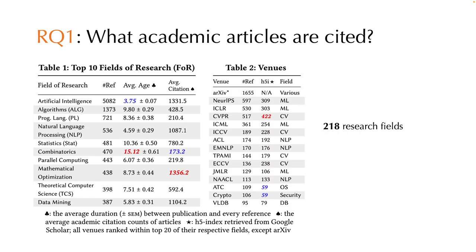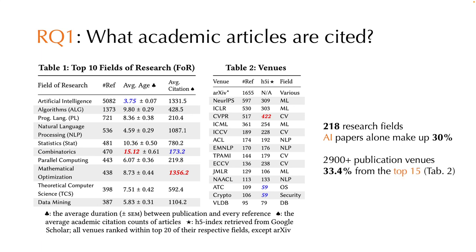The cited articles come from 218 research fields, but artificial intelligence alone accounted for over 30% of all references. Most of them are published in prestigious conferences within their respective fields.